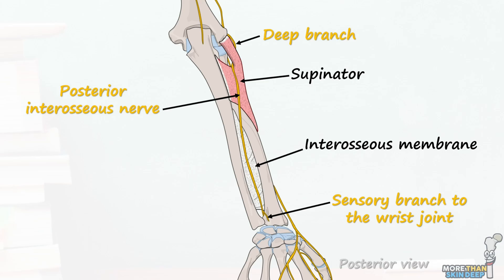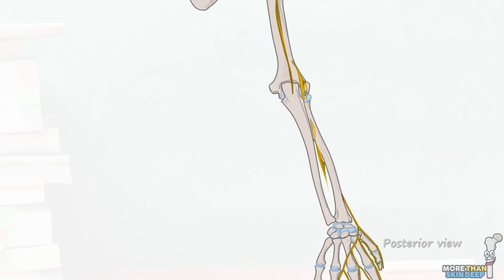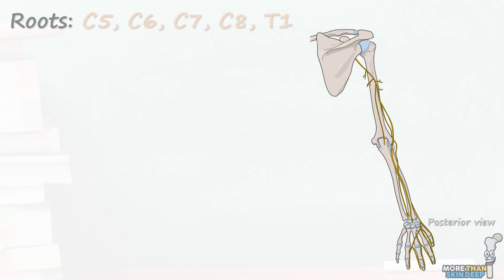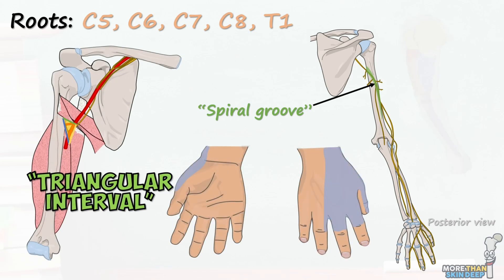The deep branch of the radial nerve innervates every muscle in the posterior compartment of the forearm — all eight of them. The radial nerve is the largest nerve in the whole upper limb and is vitally important for its functioning. Partly because of its size, it's also the most commonly injured nerve in the arm, most often due to fractures of the humerus or compression at the axilla, known as Saturday night palsy. Damage to the motor branches may result in wrist drop, which can have devastating impacts on a patient's day to day life.